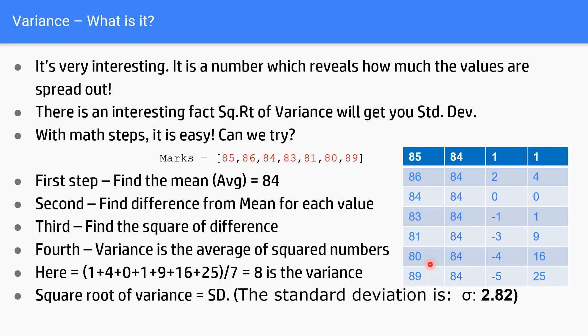Well, what is the next step? The next step is to find the square of the difference. So, 1 squared is 1, 2 squared is 4, 0 is 0, minus 1 is 1, minus 3 is 9, minus 4 is 16, minus 5 is 25. So, we have got the values here, which is nothing but the squared values.